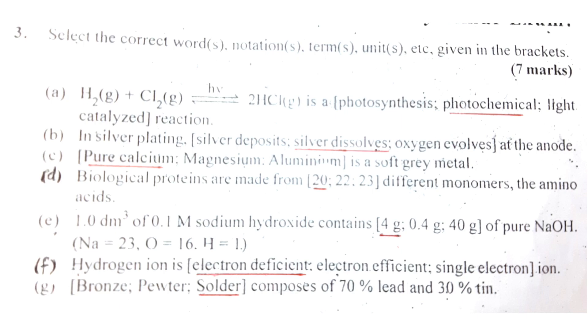Number D: Biological proteins are made from 20 different monomers — the amino acids.